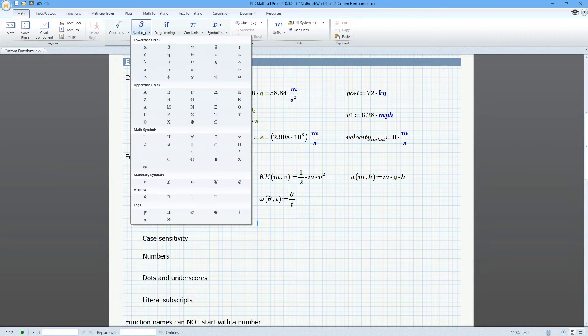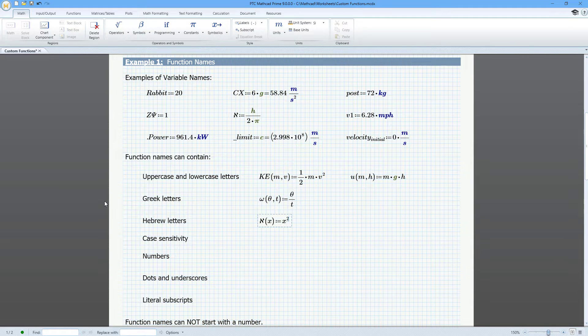You can use the Hebrew letters Aleph, Bet, Gimel, and Dalet. Function names are case sensitive. Function names can contain numbers. Function names can contain dots and underscores even as the first character.